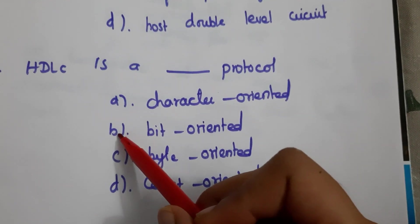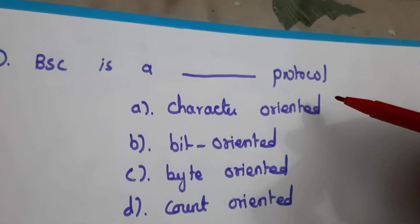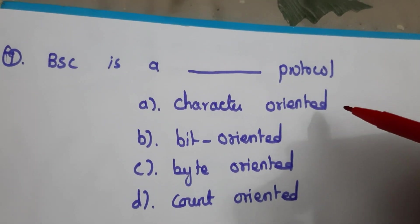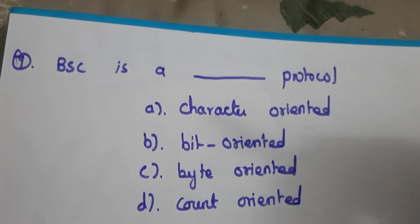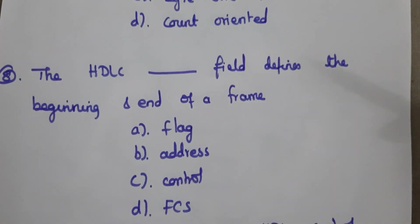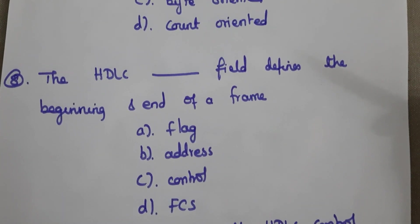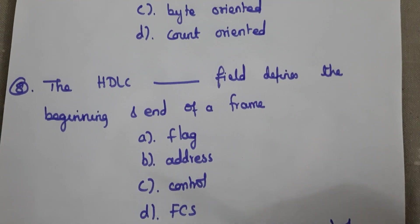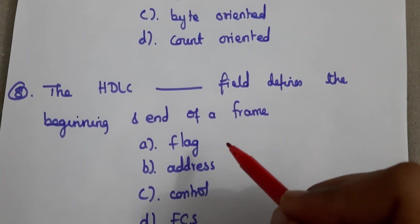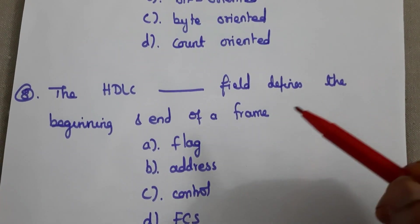Next question: BSC is a what type of protocol? BSC is a character-oriented protocol, so the answer is A. Next question: in HDLC, what defines the beginning and end of a frame? The HDLC flag field is used to indicate the beginning and end of the frame, so the answer is A.